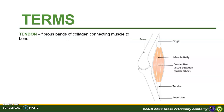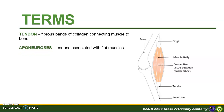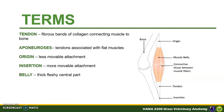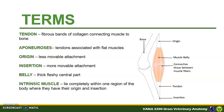Tendons are fibrous bands of collagen connecting muscles to bone. Aponeurosis are tendons associated with flat muscles. The origin is the less movable attachment while the insertion is the more movable attachment. Belly is the thick fleshy central part of a muscle. Intrinsic muscles lie completely within one region of the body where they have their origin and insertion, in contrast to the extrinsic muscle which run from one region of the body to another. There is also a list of muscle name derivation on the handout provided — please read them to get additional ideas on how the muscles were named.